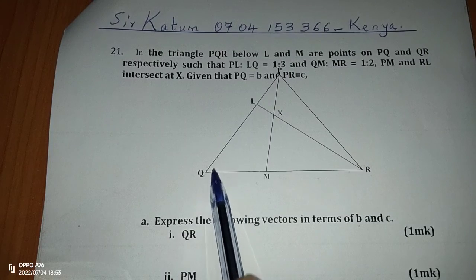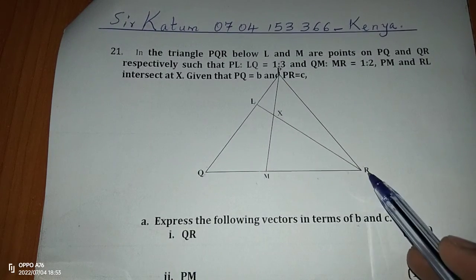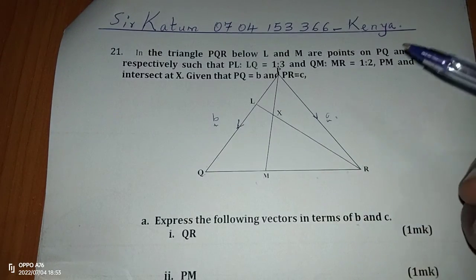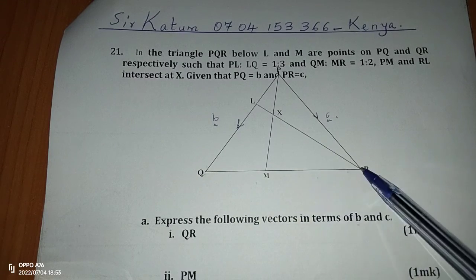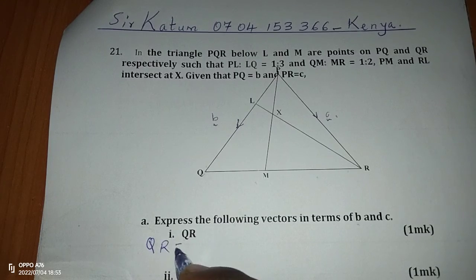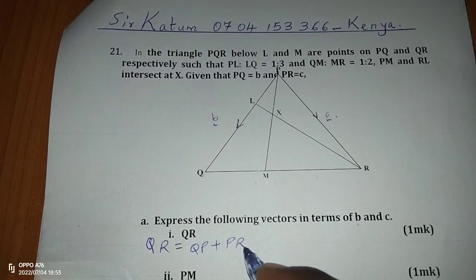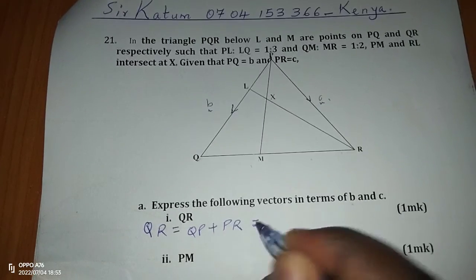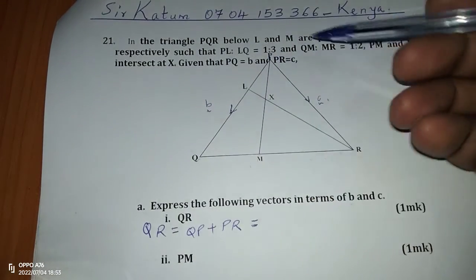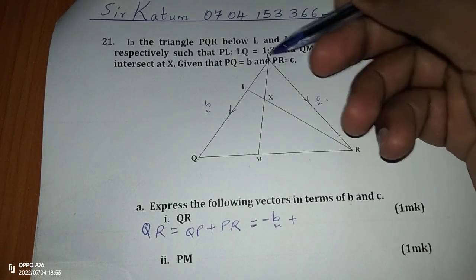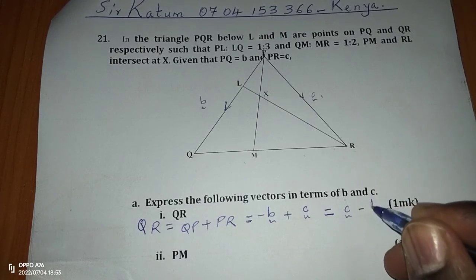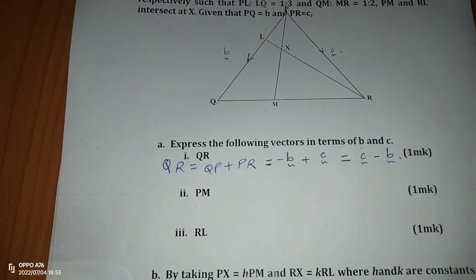Let's start by calculating QR in terms of B and C. The only vectors provided are vector B and vector C. To get QR, we follow Q to P then P to R. Moving from Q to P, since PQ is vector B, then QP is negative B. So we have negative B plus C, which we rearrange as C minus B. That is the expression of QR in terms of C and B.